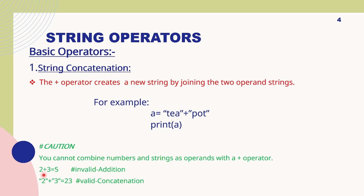One caution here: if you don't enclose strings in inverted commas and they are just numbers, Python will do mathematical addition. But if you enclose them in quotes or apostrophes, they will not add mathematically — they will display one number followed by the other. For example, '2' plus '3' enclosed in quotes gives 23, not 5.